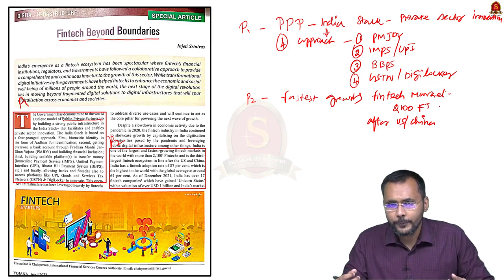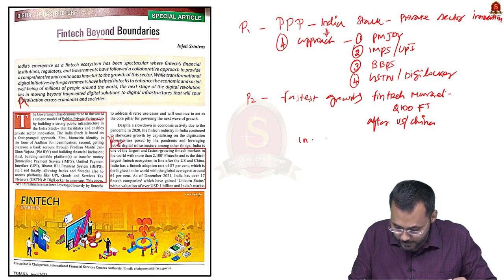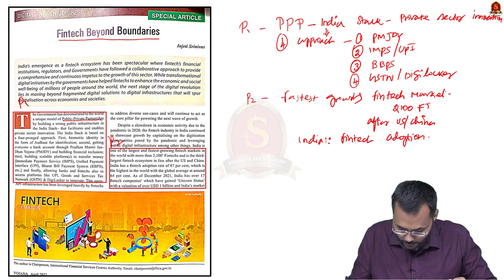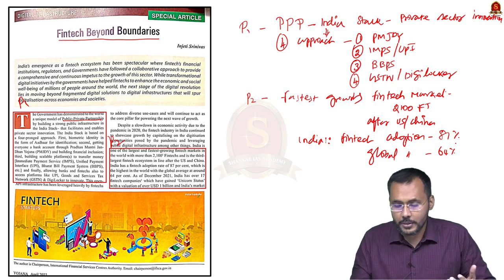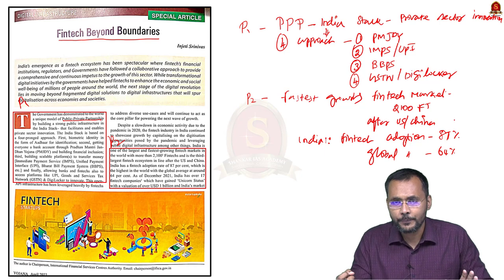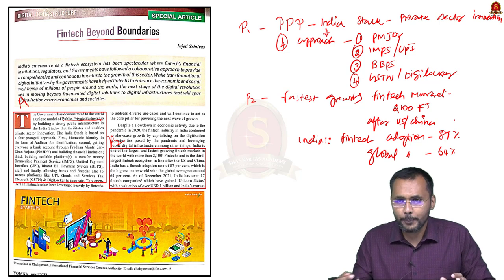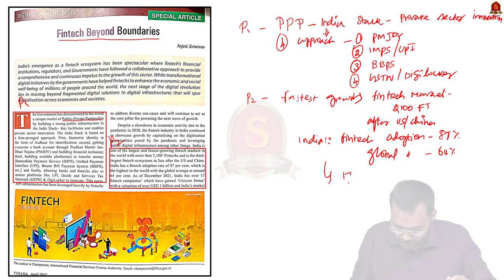India's fintech adoption rate is around 87%, while the global level is around 64%. This clearly shows how ready the Indian economy is for new technologies. When Google Pay or Paytm came, people were ready to use them for transactions. The adoption rate is very high — 87% for India versus 64% globally.